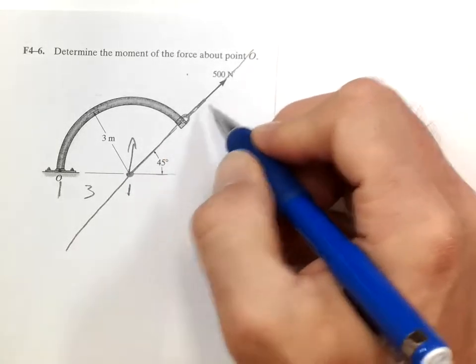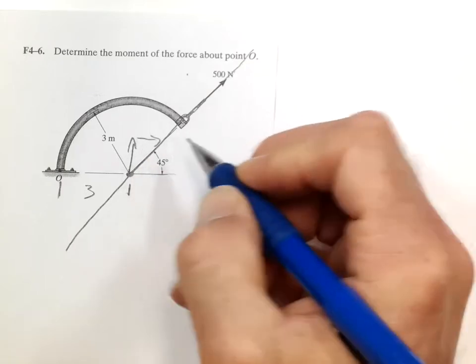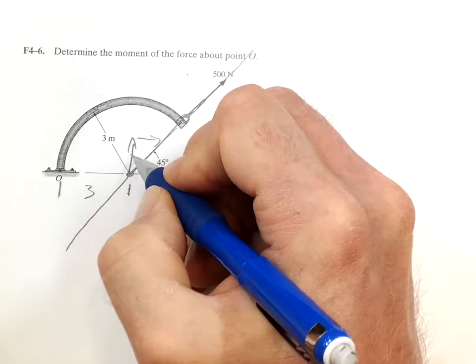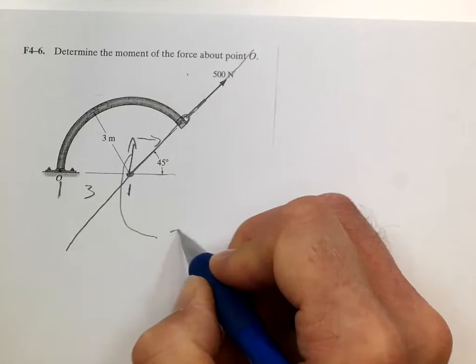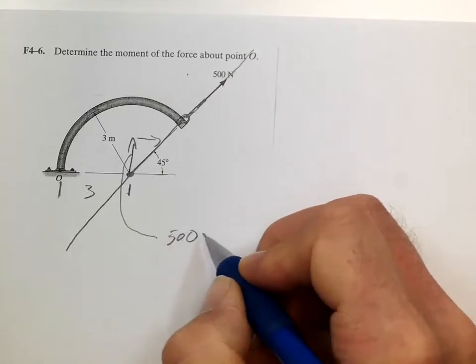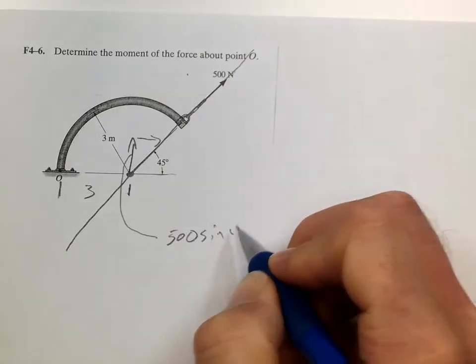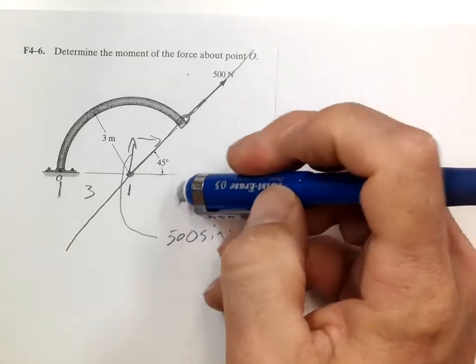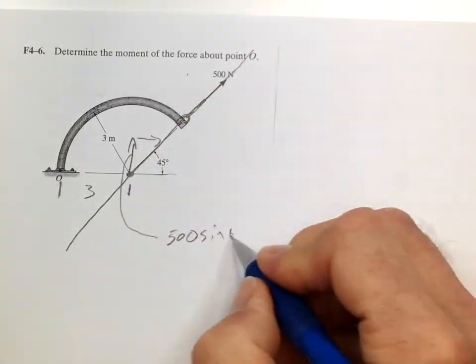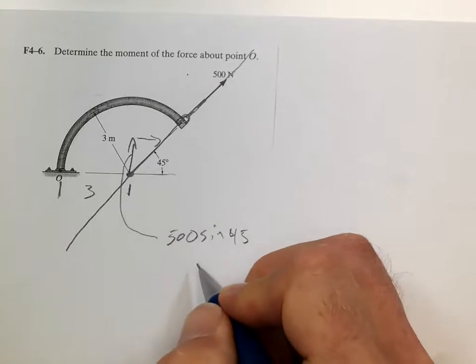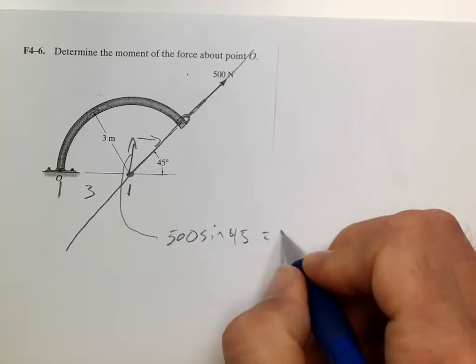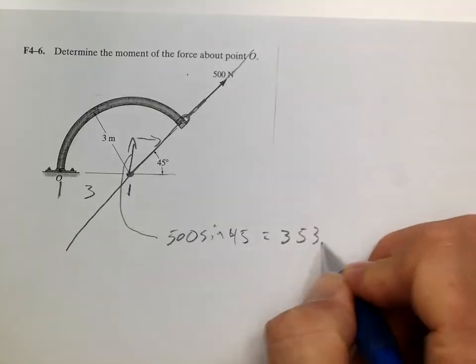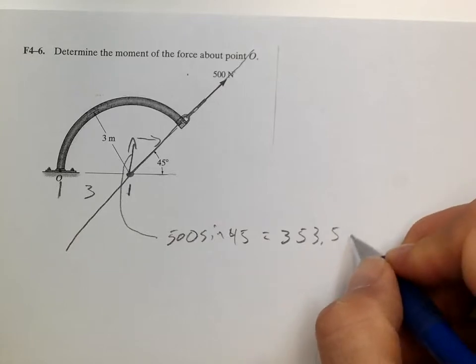Now, this is 45 degrees, so the vertical component here is going to be 500 sine, or cosine. And I guess we do that here. It's sine 45. It doesn't matter. And so that is 353.5 newtons.